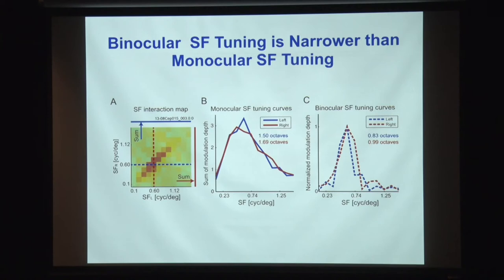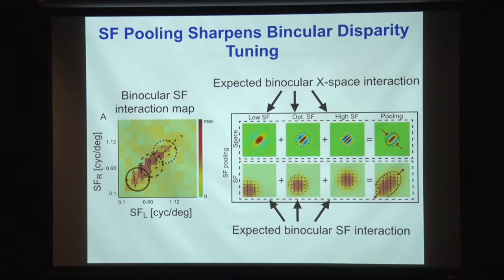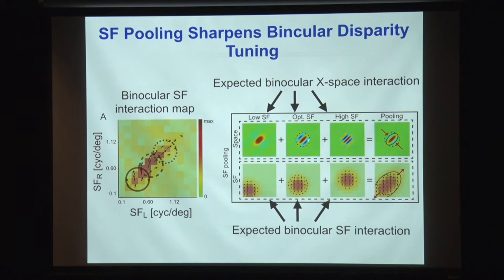So that's the explanation: if we do spatial frequency pooling, it sharpens binocular disparity tuning. Here are three different spatial frequency scales summed together. If you look at the disparity tuning curve in spatial frequency space, it's the sum of those three, which actually tightens the diagonal dimension — the depth dimension. So pooling in the spatial frequency domain tightens disparity selectivity in space.